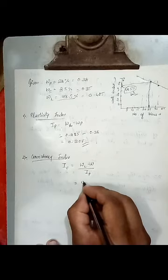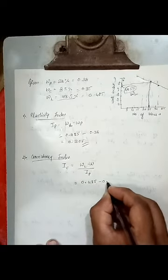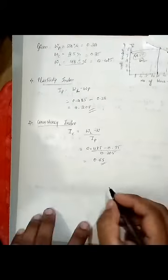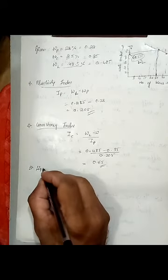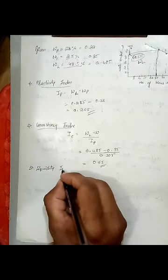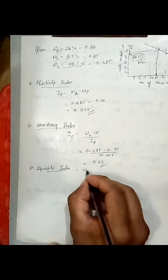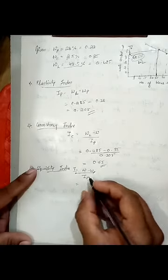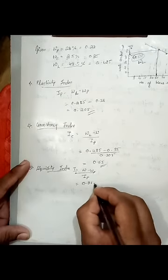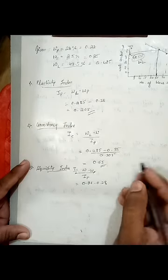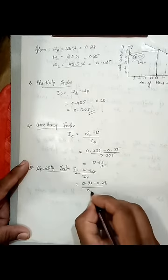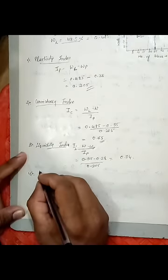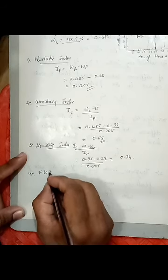Second, consistency index, so that is 0.65. Then third one, liquidity index is equal to WC minus WP divided by IP. So IL is 0.35 minus 0.28 divided by 0.205, so it comes around about 0.34.